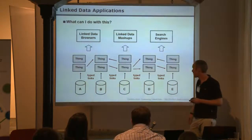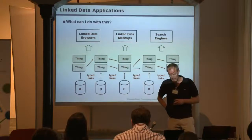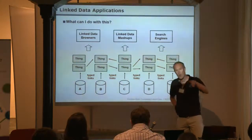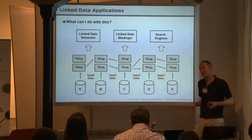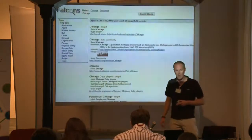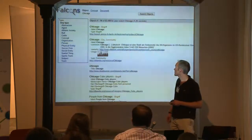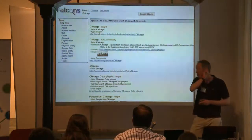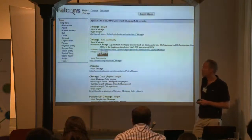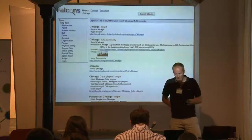What applications do people build on this data space? There are simple linked data browsers, linked data mashups, and linked data search engines. The most interesting applications are the search engines, because they really use the links to crawl the complete data space — making a local copy of all data out there and then answering queries over it. One example is Falcon S, implemented by a research group in China: searching for Chicago finds 63,000 records in different databases that have some relation to Chicago.